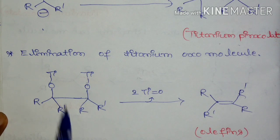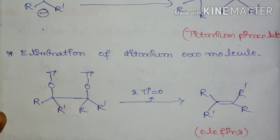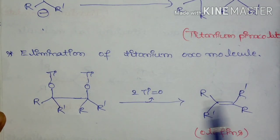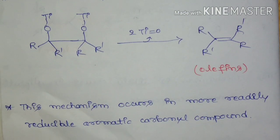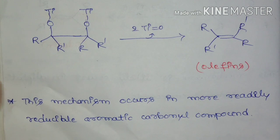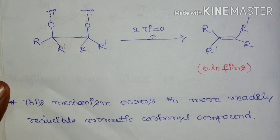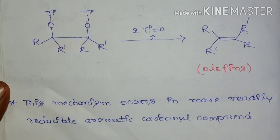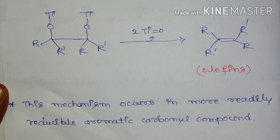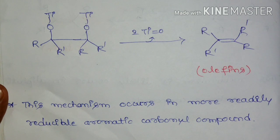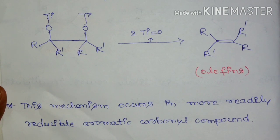The formation of titanium pinacolate is common to both the one-electron and two-electron mechanisms. The only difference is that in the one-electron mechanism a ketyl radical is formed, whereas in the two-electron mechanism a ketyl anion is formed. The last step is similar: elimination of the titanium oxo molecule leads to the formation of olefins. This two-electron mechanism is going to occur in the case of more readily reducible aromatic carbonyl compounds — if the starting material is an aromatic carbonyl compound that is very easily reducible, then this two-electron mechanism may occur to form olefins.